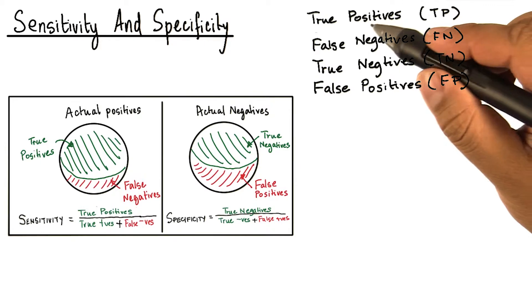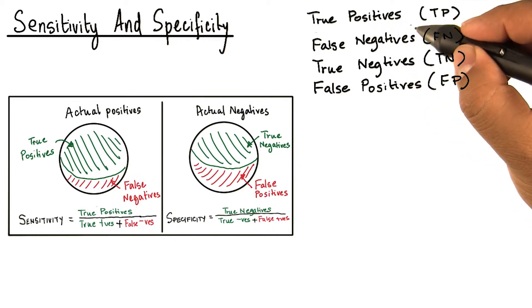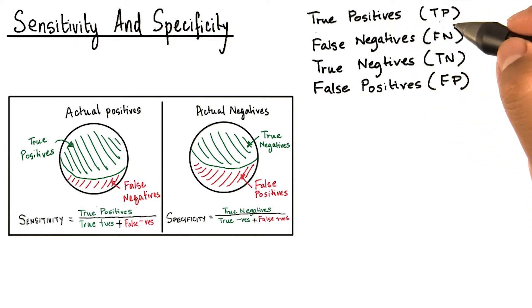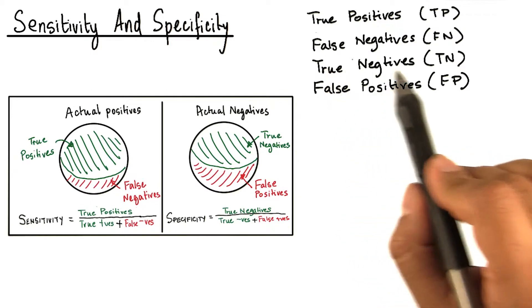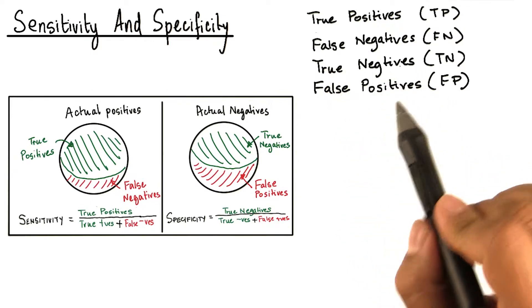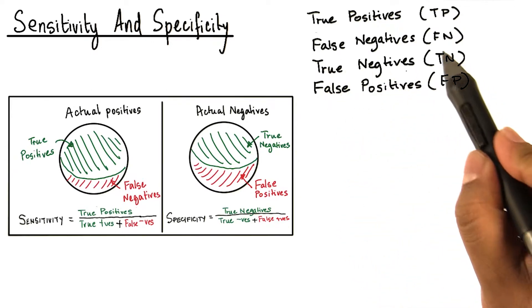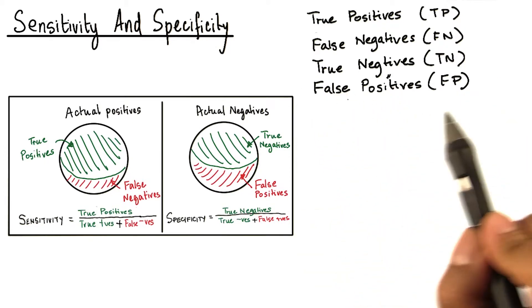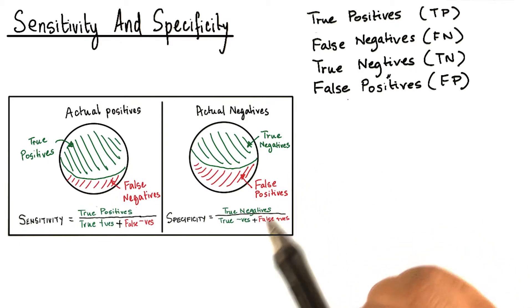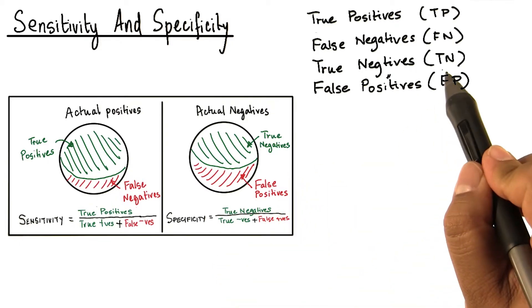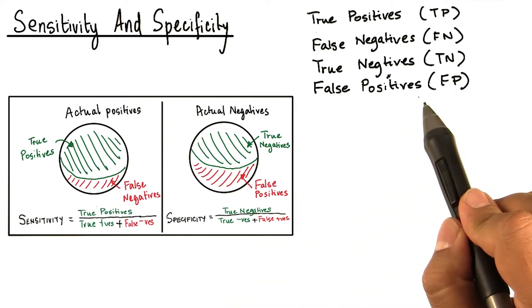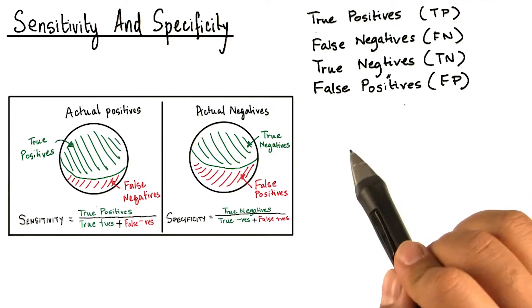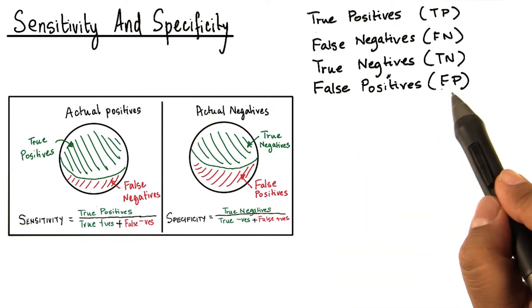Let us denote the true positives, which is the number of actual positives that were classified or predicted to be positives, with TP. Let's denote the false negatives, which are actual positives classified as negative, with FN. Let's denote true negatives, which are the number of actual negatives that are classified to be negative, with TN. And false positives, which are actually negatives classified as positive, with FP.